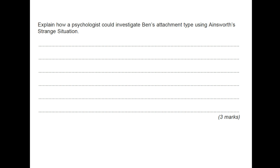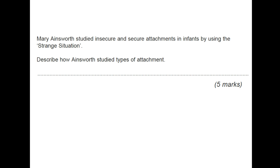Explain how psychologists could investigate Ben's attachment type using Ainsworth's strange situation. You could talk about going to a laboratory where there are scenarios where Ben is left alone and a stranger comes in to see how Ben will react. They can also observe how he reacts when his mother comes back. Very briefly, for three marks, you just do a brief account of the strange situation scenario.